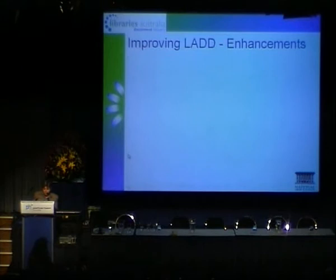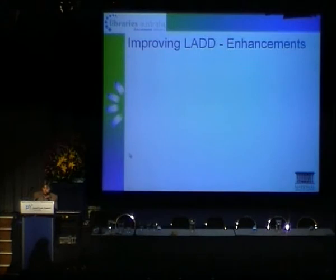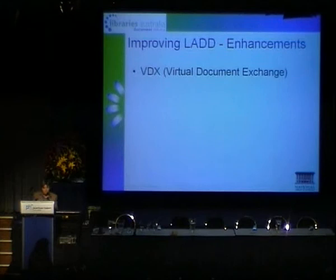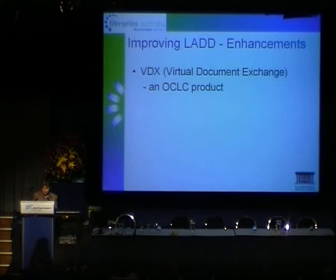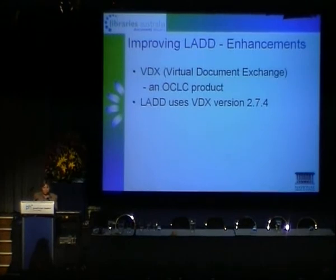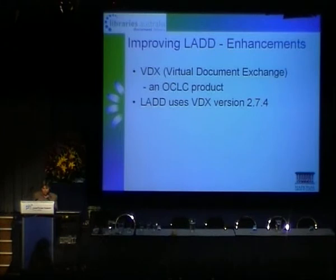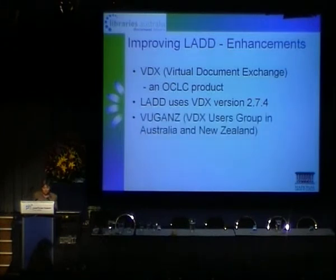If the improvement can't be achieved by a configuration change, there's a formal mechanism available to lodge suggestions for enhancements to the software vendor OCLC. Libraries Australia is an active member of VUGANS, which is the VDX Users Group in Australia and New Zealand. Each year VUGANS calls for enhancement suggestions from its members, which are voted on and the prioritised list is forwarded to OCLC, who will then advise which enhancements will be included in future releases of the software.